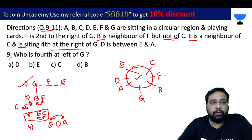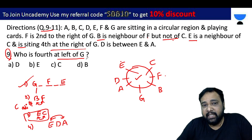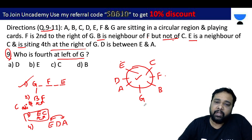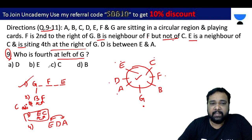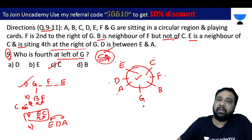Who is fourth to the left of G? G's left side: first, second, third, fourth person. E's neighbor is C. The answer is C.